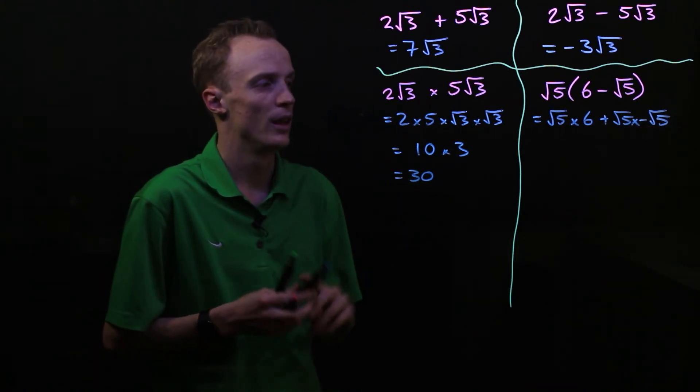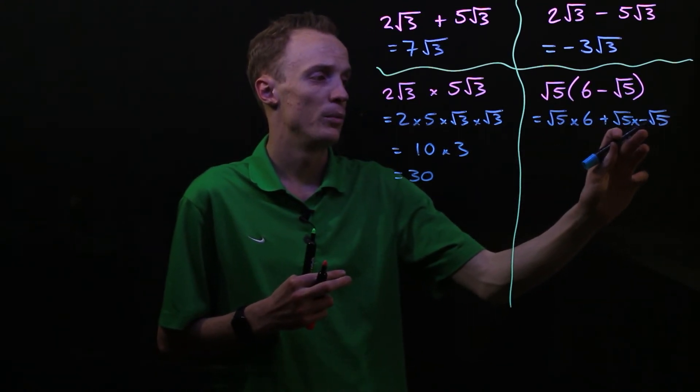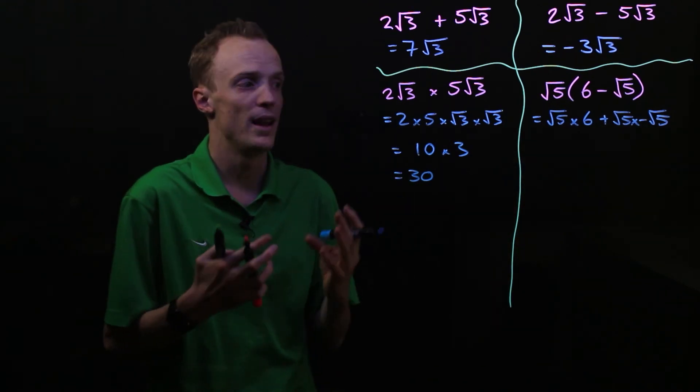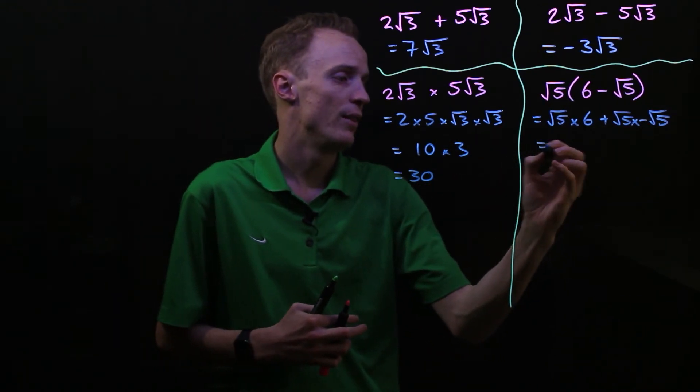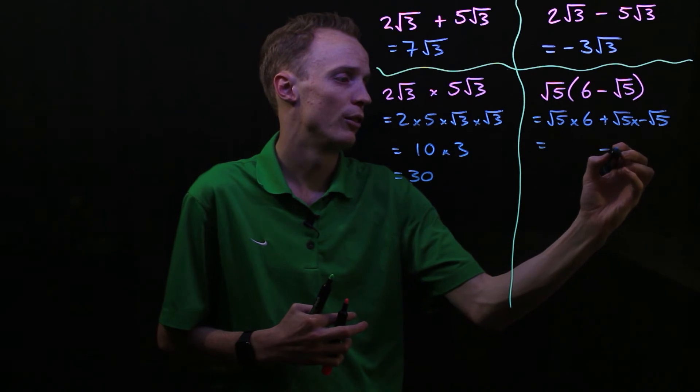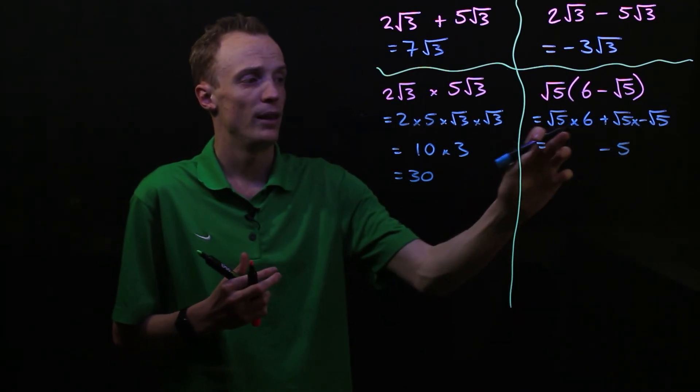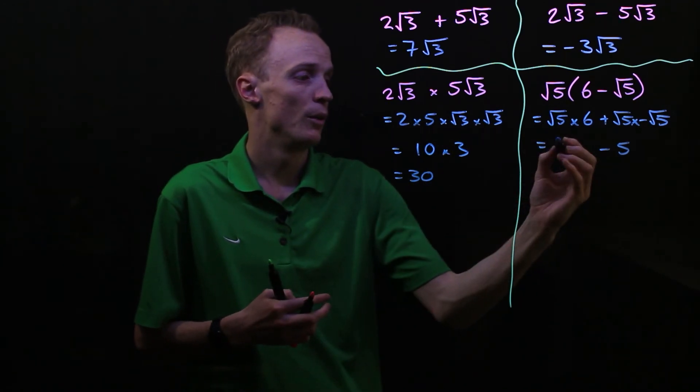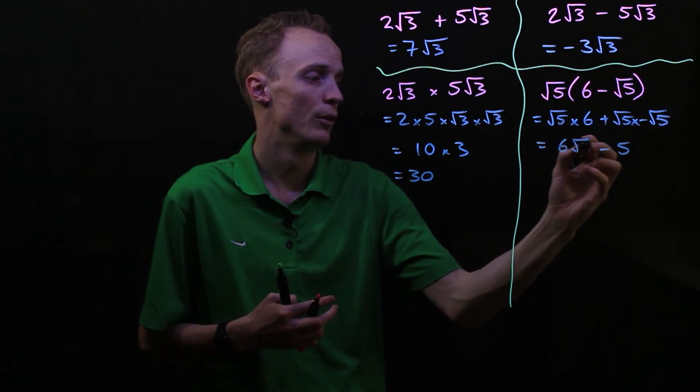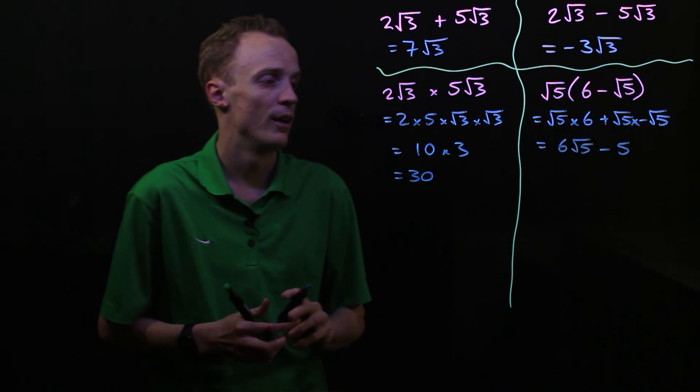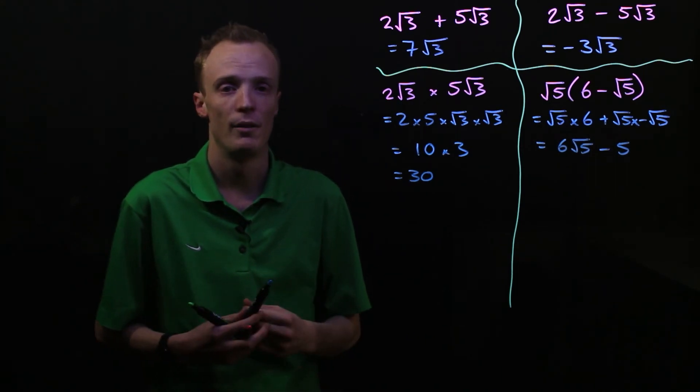Now what's really neat here is √5 multiplied by -√5 will just be -5, so at the end here this becomes subtraction, subtract 5, and we rewrite this in product notation so we say that this is 6√5. Our final answer here is 6√5 - 5.